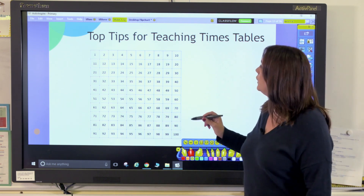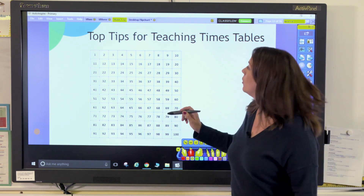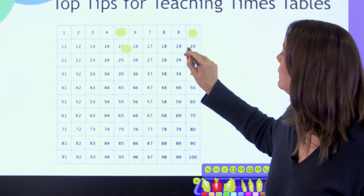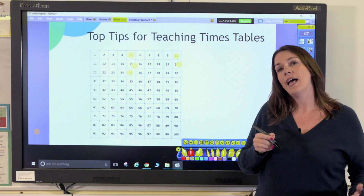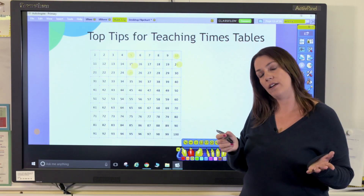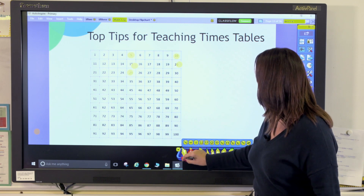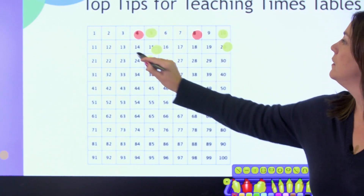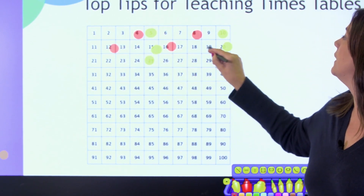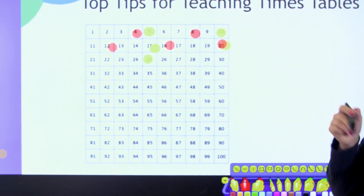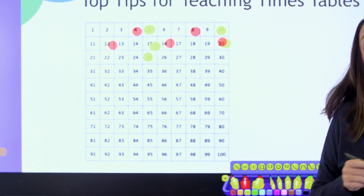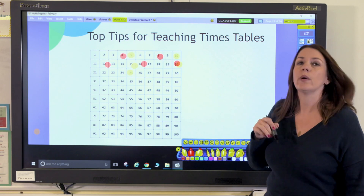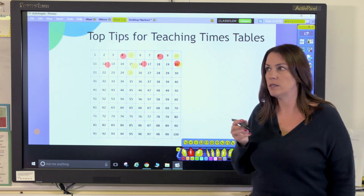For example, if I highlight the numbers in the five times table — five, ten, fifteen, twenty, twenty-five and so on — and then I ask pupils to highlight the ones in the four times table. I'll change colour: four, eight, twelve, sixteen, twenty. Pupils can easily see that twenty is in both the four and the five times table, so it is a common multiple. You can use a hundred square for teaching any times table in this way.